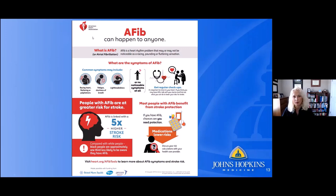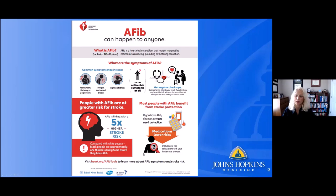The American Heart Association provides patient education material on atrial fibrillation that defines the condition, describes symptoms, and importantly notes that you could have no symptoms at all and still have atrial fibrillation. It highlights a five times higher stroke risk associated with AFib, notes racial disparities in AFib and stroke risk, and communicates that medications are needed if atrial fibrillation is present.